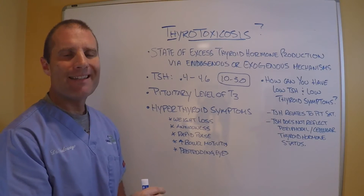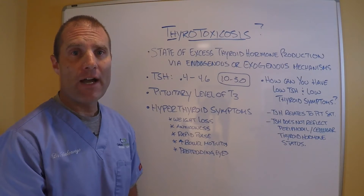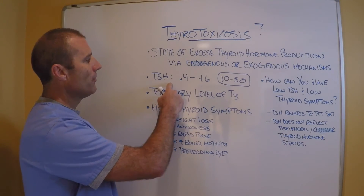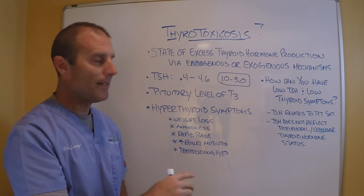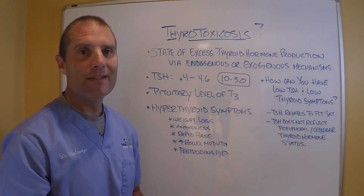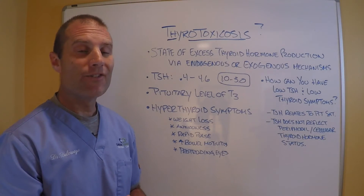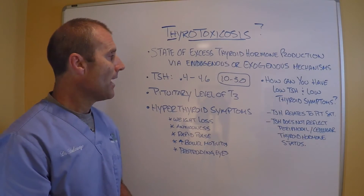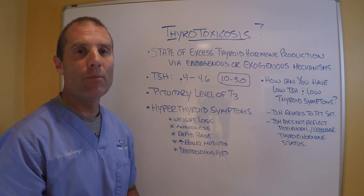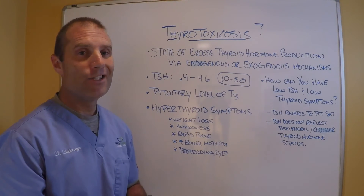Thyrotoxicosis is an excessive production or an excessive prescription of thyroid hormone. It's overwhelming the pituitary gland and drops TSH levels because the pituitary is saturated with T3, but you can still have hypothyroid symptoms because the same mechanisms causing low thyroid status in your peripheral cells are still there. If those mechanisms are still there and you continue to flood the system with more thyroid hormone to try to make hypothyroid symptoms go away, it just doesn't work.